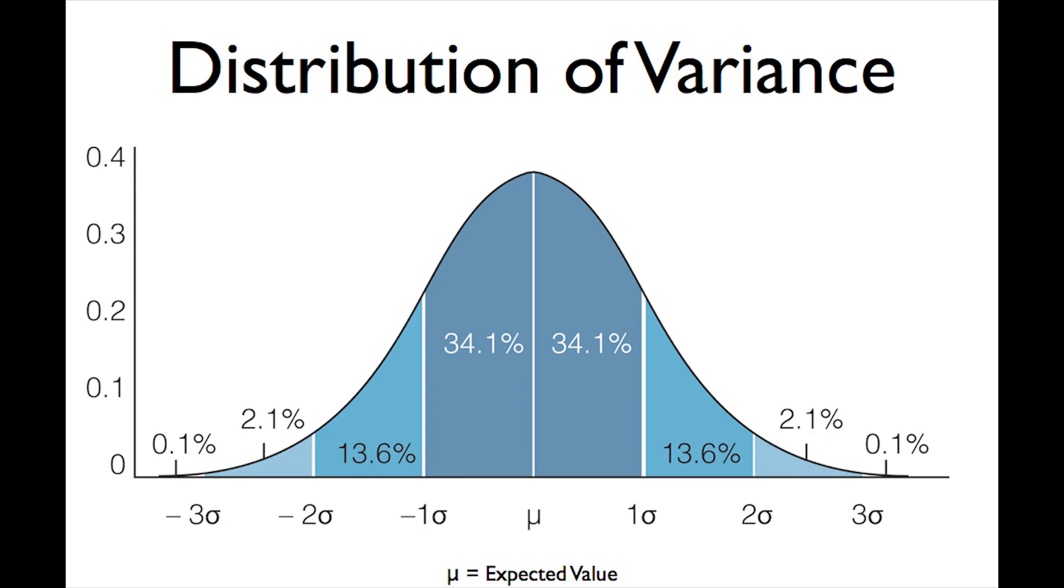Instead of showing the dispersion in weight, we show it in standard deviations from the mean. When we get to distributions, we'll do some calculations, but for now, just know that standard deviation is a way of referring to the same dispersion—the X values around the mean—but using normalized measurements.